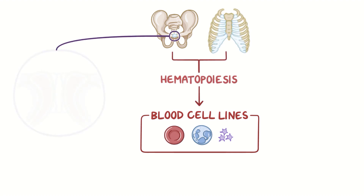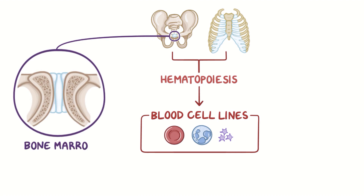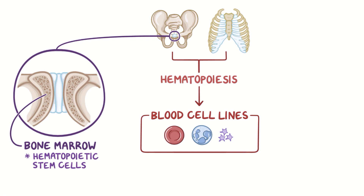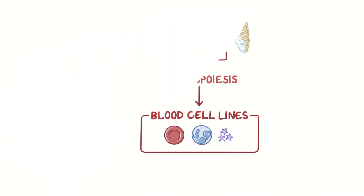This process starts in the bone marrow, the innermost portion of the bone, where the hematopoietic stem cells reside. These serve as progenitor cells for all the different cell types found in the blood.